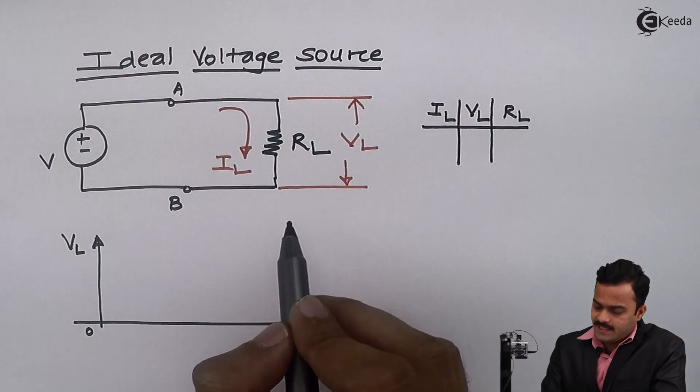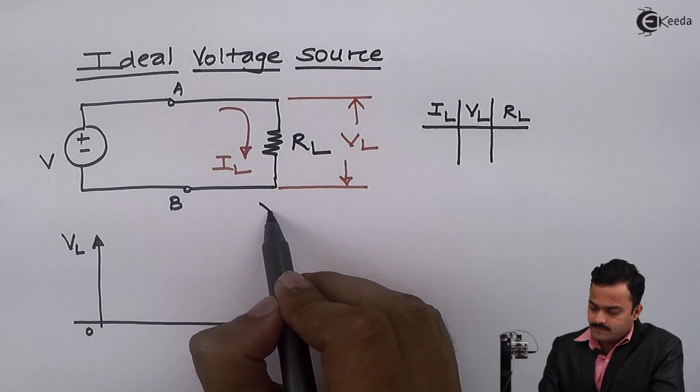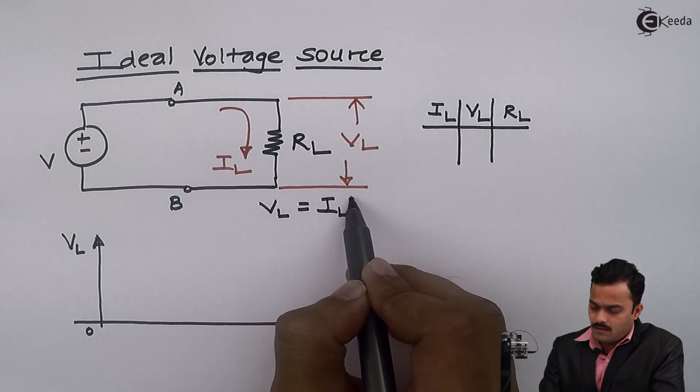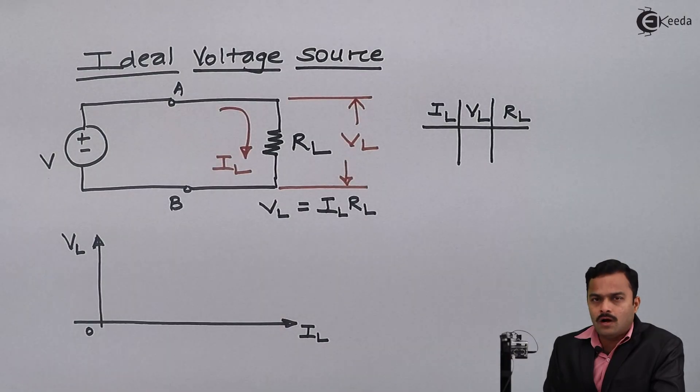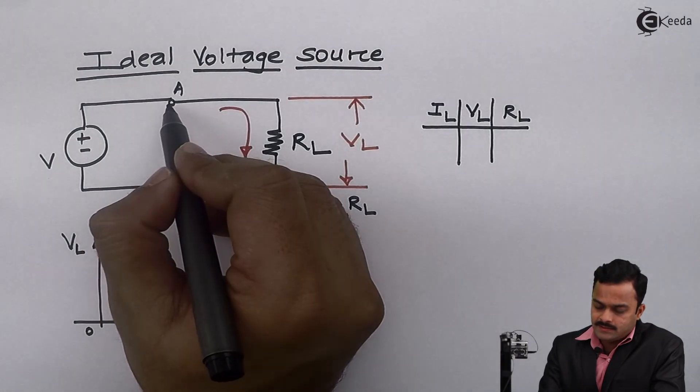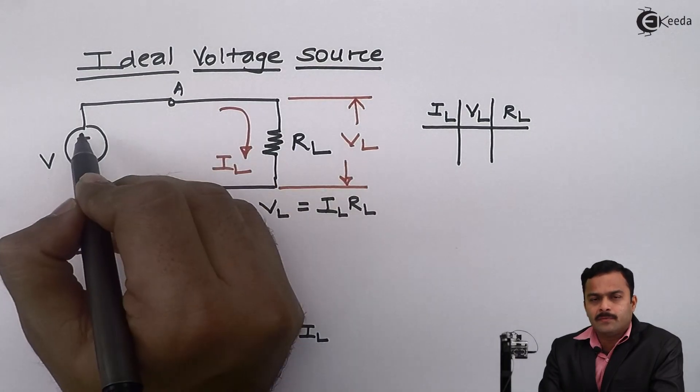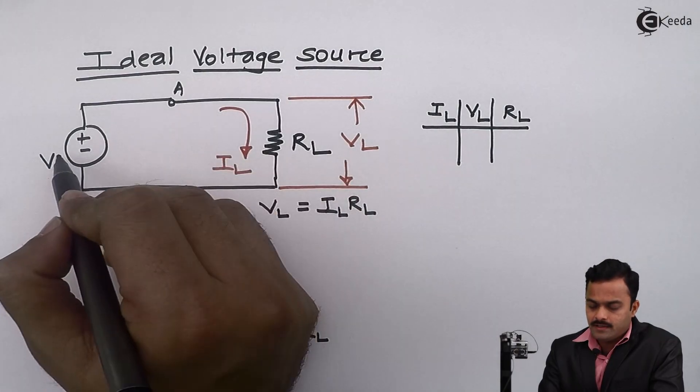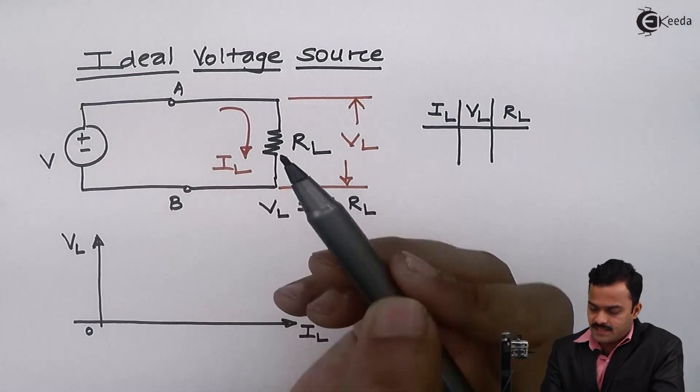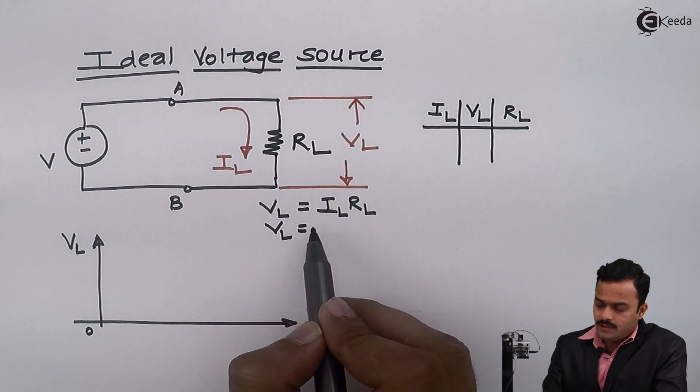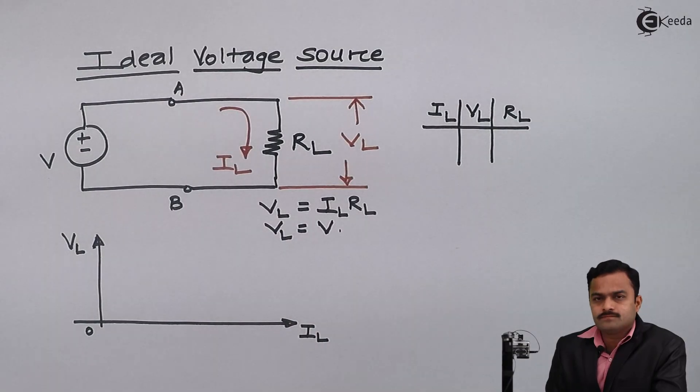VL is given as IL into RL. Since the resistor is connected between points A and B where voltage source V is present, I can say VL is equal to V. Let's take a simple example.